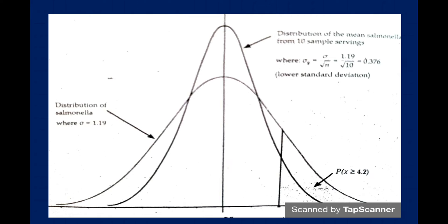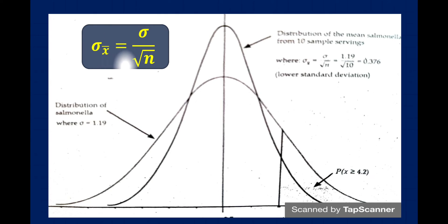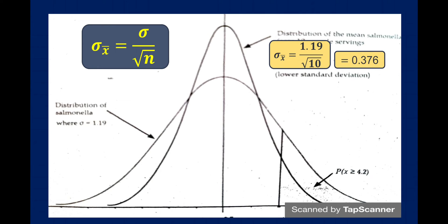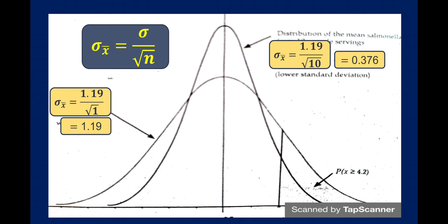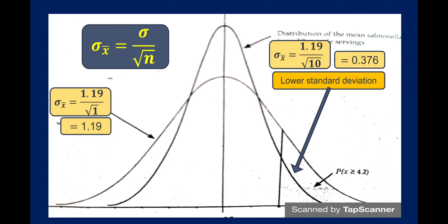To find the standard deviation of the sampling distribution of the sample means from 10 sample servings using Theorem 3-2: given sigma is 1.19 and n is 10, 1.19 divided by the square root of 10 is equal to 0.376. For 1 serving, 1.19 divided by the square root of 1 equals 1.19. Therefore, 0.376 is the lower standard deviation and 1.19 is the higher. The lower the standard deviation, the shorter the spread of the distribution around the mean; otherwise the spread is wider around the mean.